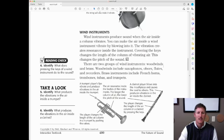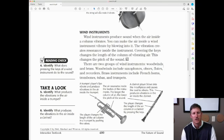Wind instruments produce sound when the air inside a column vibrates. You can make the air inside a wind instrument vibrate by blowing into it. The vibration creates resonance inside the instrument. Covering the keys changes the length of the column of vibrating air. This changes the pitch of the sound. So a clarinet or a recorder. You guys have all played a recorder when you cover it up. It produces different sounds. There are two different groups of wind instruments, woodwinds and brass.